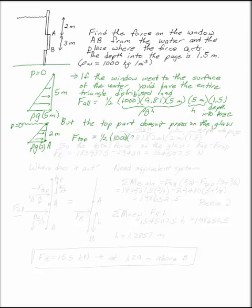Base times height, where the base is rho g h, and the height is 2 meters. This is the height of my triangle. And then I have the 1.5, which is the depth into the page again.